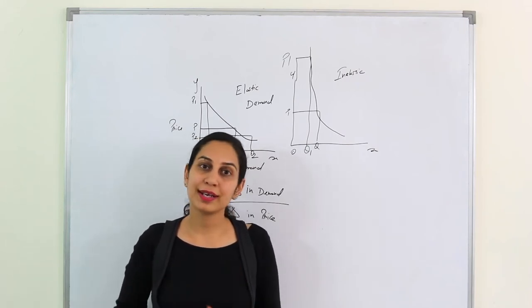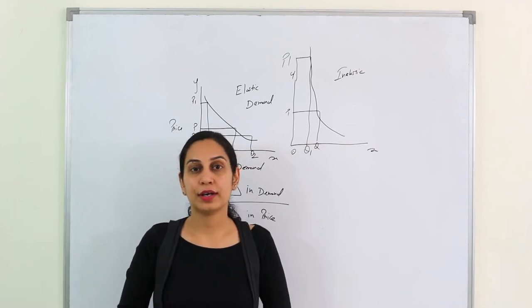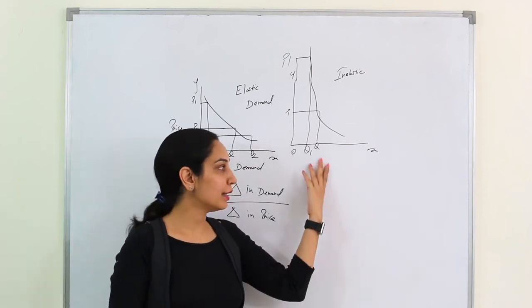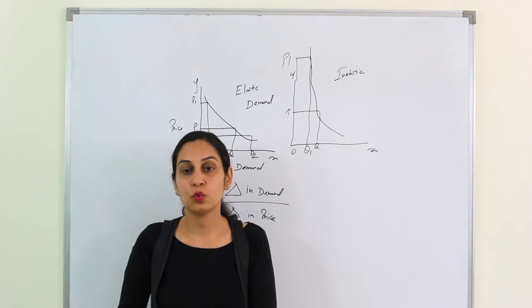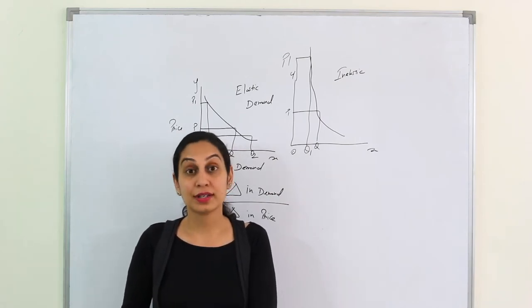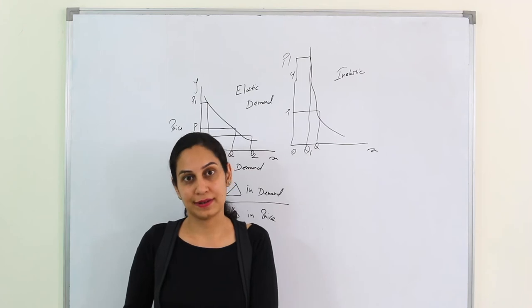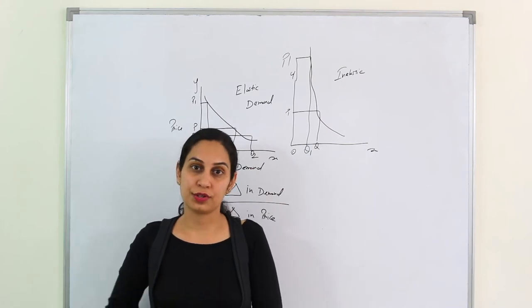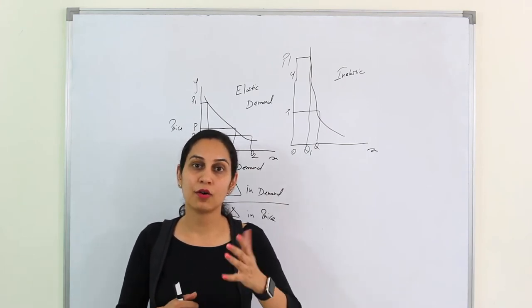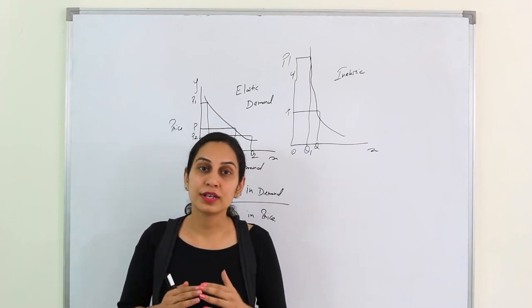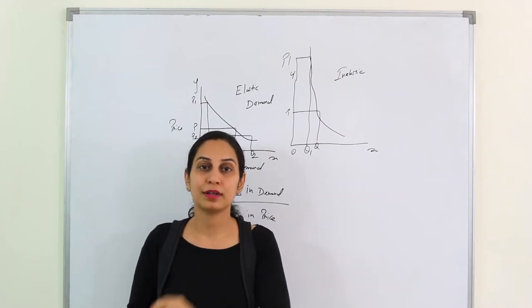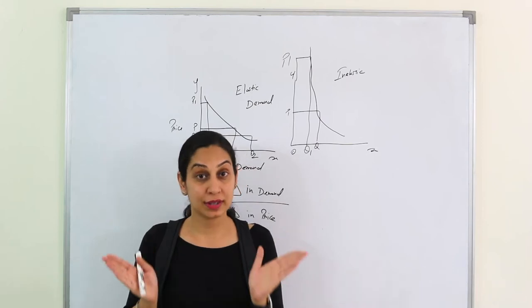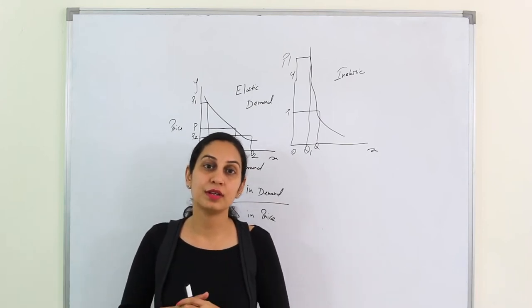Brand loyalty makes the demand Inelastic because loyalists don't care what the price is, they will consume it. Substitute goods like tea and coffee share inverse relationship. When tea prices increase, coffee demand increases. So substitute goods go in opposite directions.